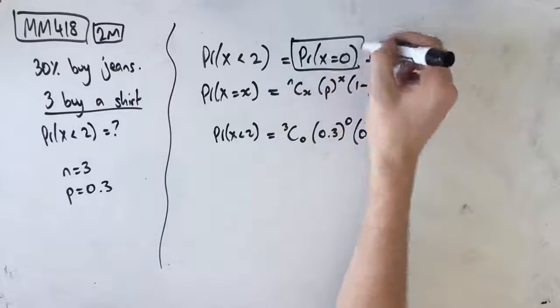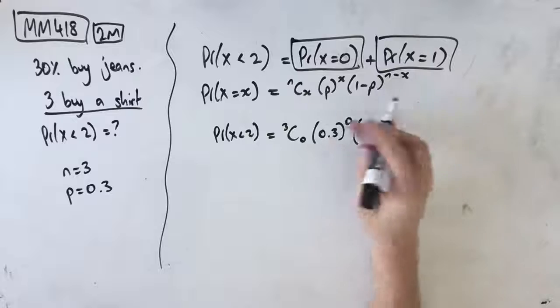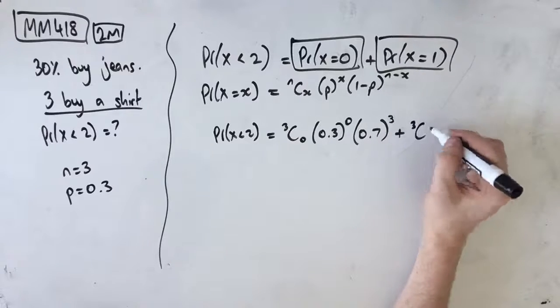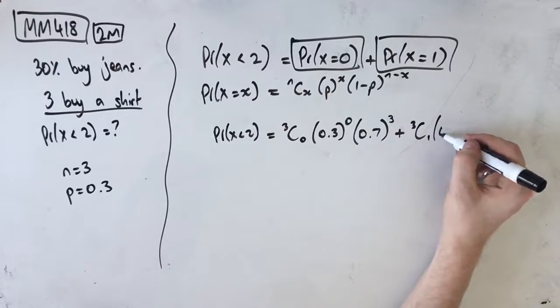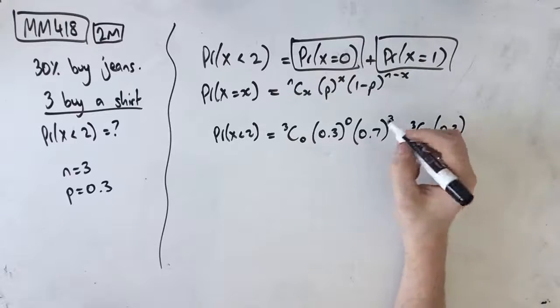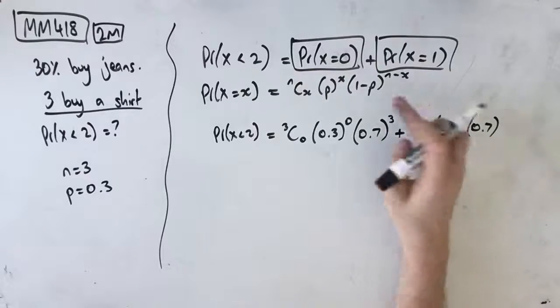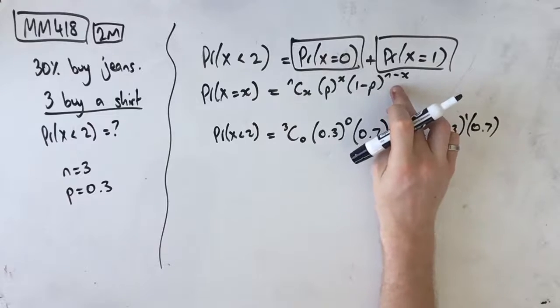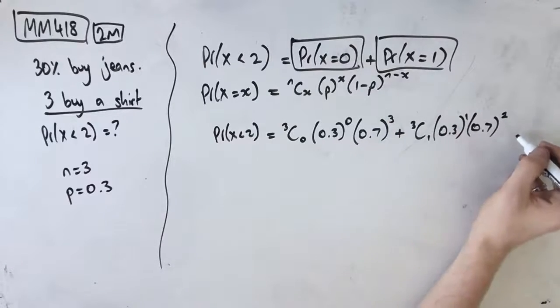Now we've done this, now we need to do this. So plus nCx, so n is still 3, C1, times p which is 0.3 to the power of x which is 1, times 0.7 which is the 1 minus p to the power of n minus x which is 3 minus 1, so 2. This is our first mark.